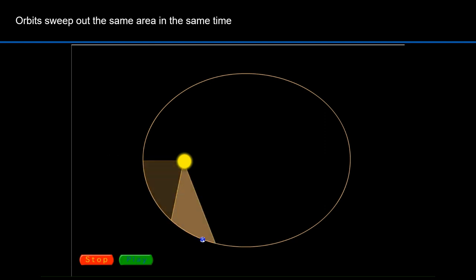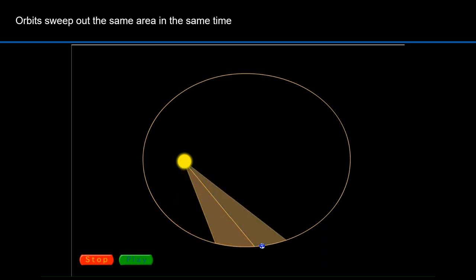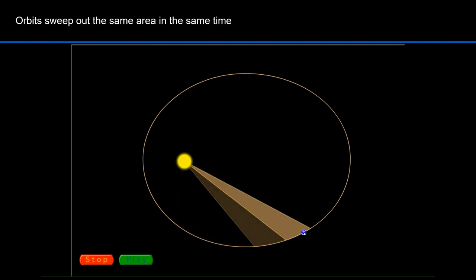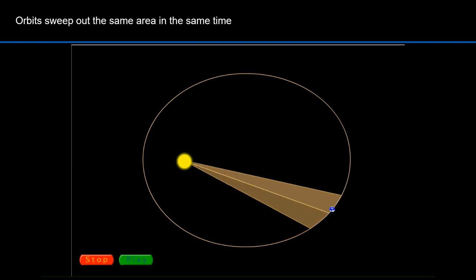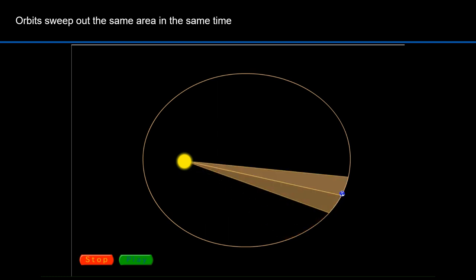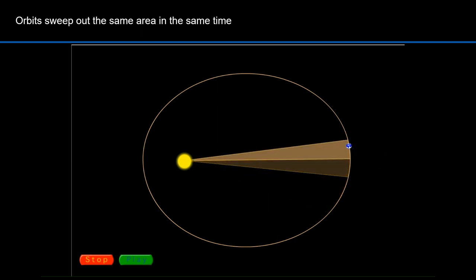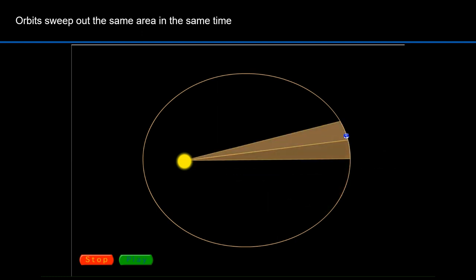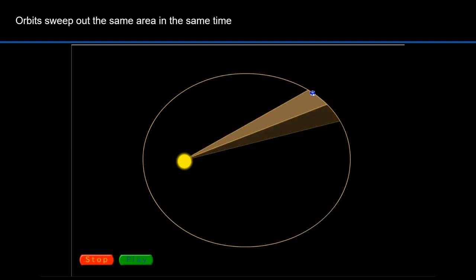This animation demonstrates Kepler's second law. Notice that at perihelion the Earth moves faster while at aphelion it moves slower. The areas of all the brown wedges are the same, and the motion of the Earth through each wedge takes place in the same amount of time. The orbit slows down at aphelion because the wedges are longer; likewise it speeds up at perihelion because the wedges are shorter.